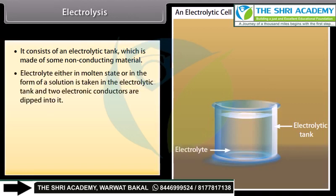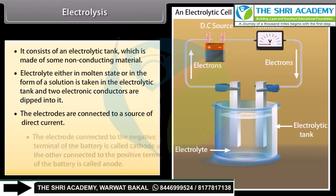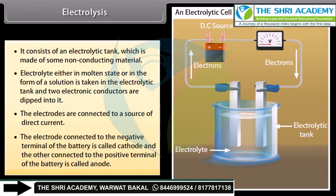The electrolyte, either in molten state or in the form of a solution, is taken in the electrolytic tank, and two electronic conductors are dipped into it. The electrodes are connected to a source of direct current. The electrode connected to the negative terminal of the battery is called the cathode, and the other connected to the positive terminal of the battery is called the anode.